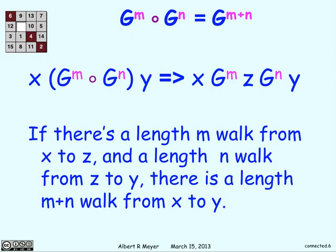Why this is the same thing as G^(m+n) makes sense. If there's a path length m to z and a path length n from there to y, you just go from x to z in m steps, then z to y in n steps. And you have m plus n steps from x to y.